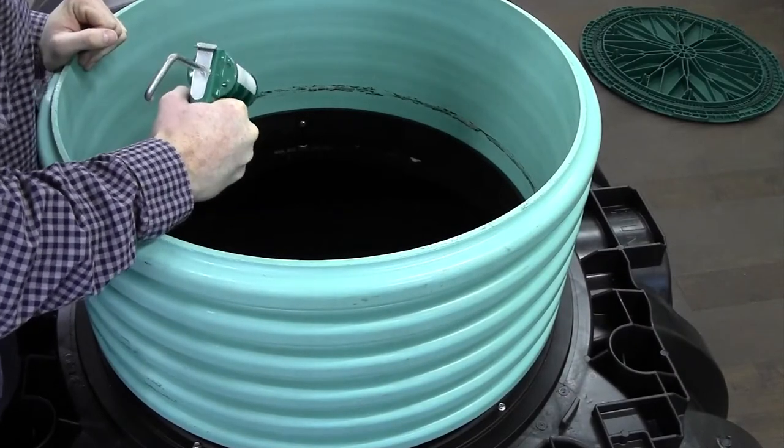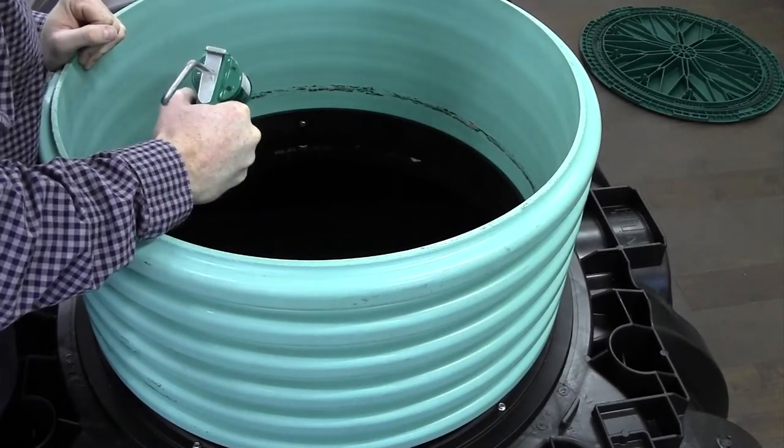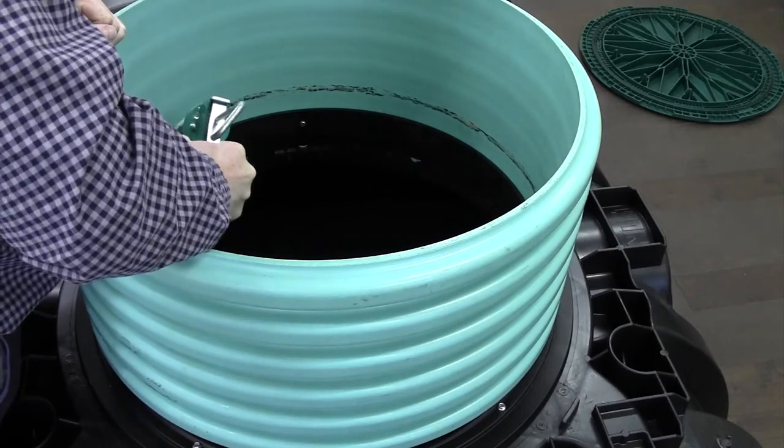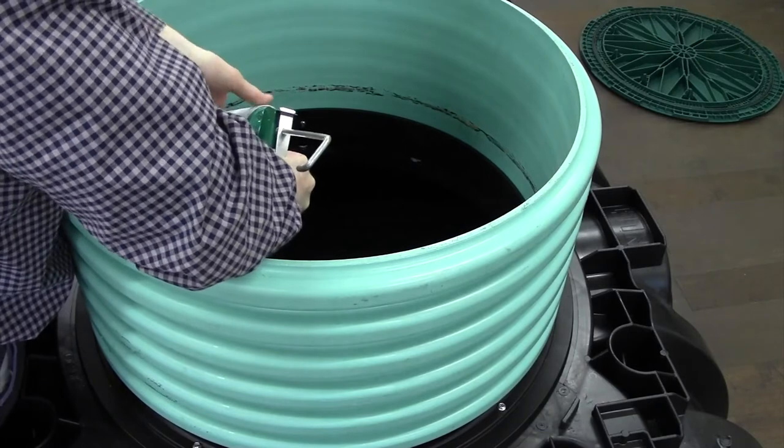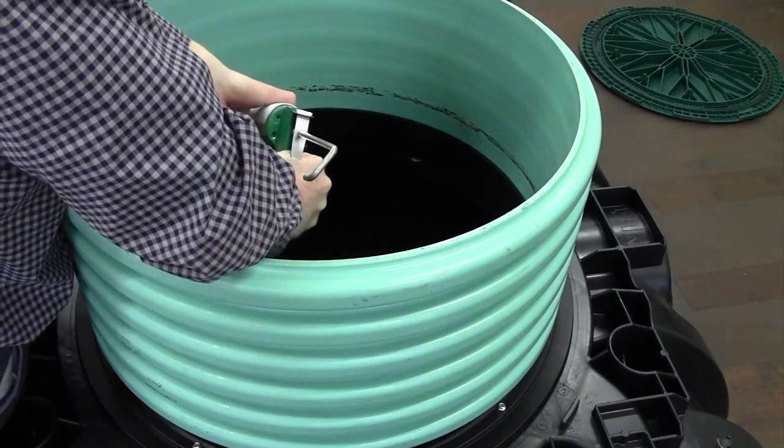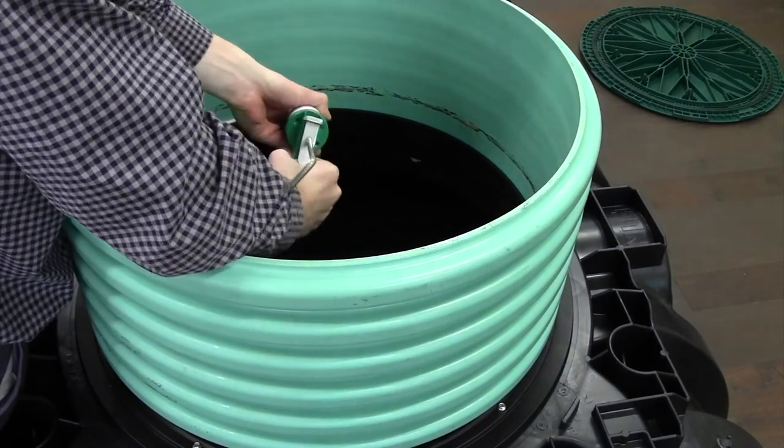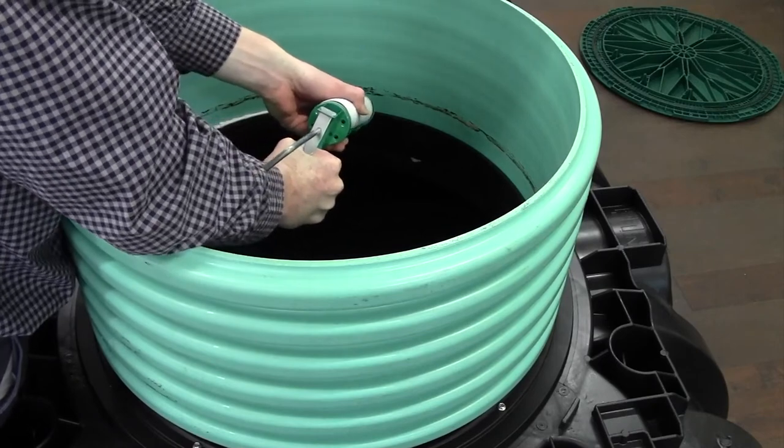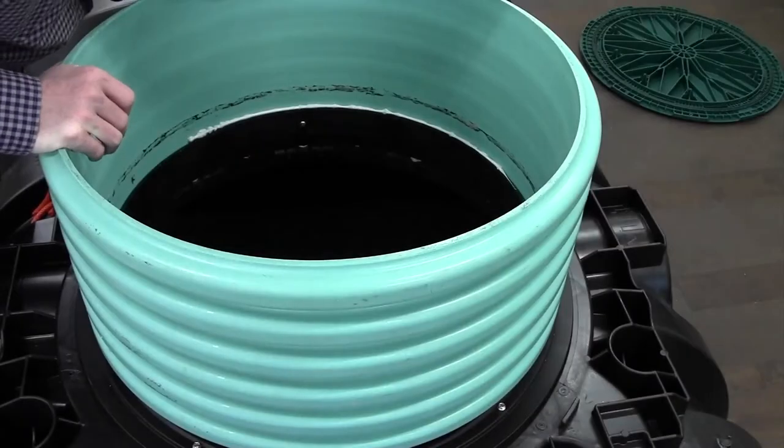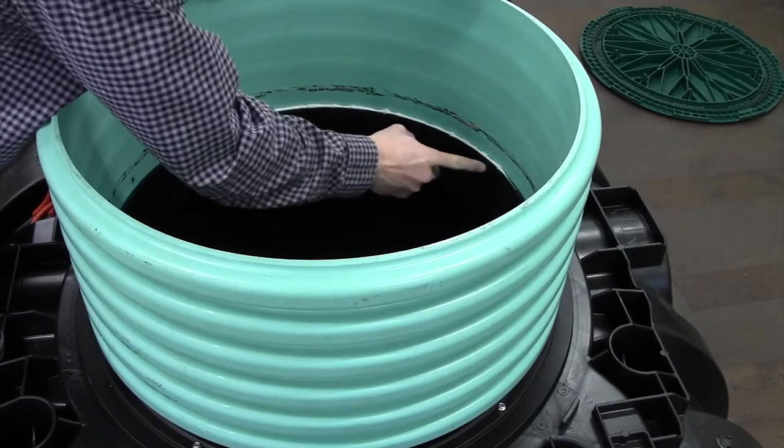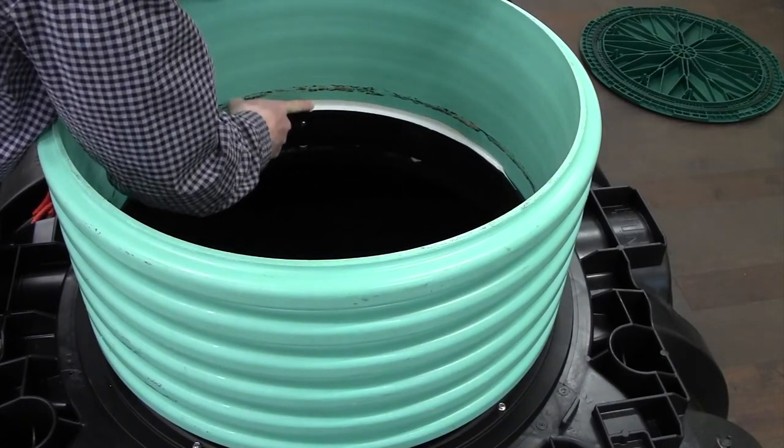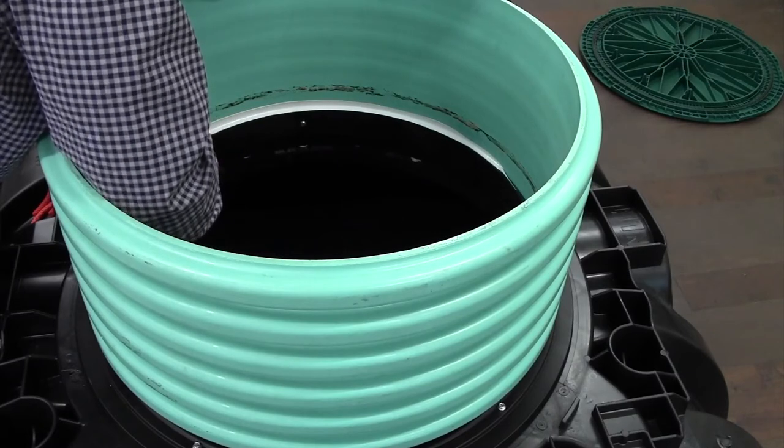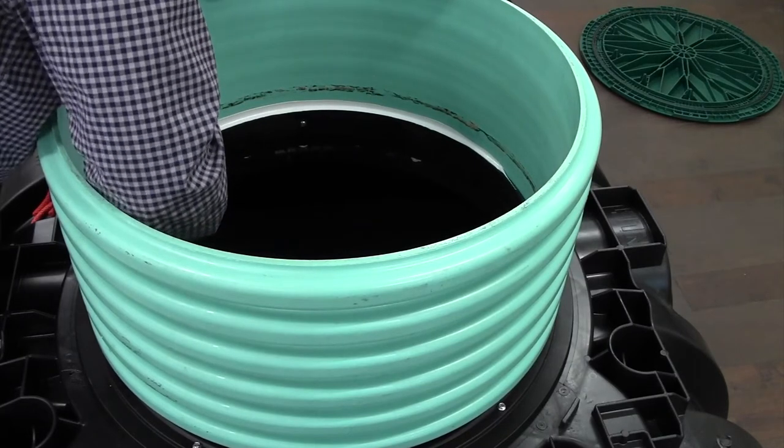Once you've installed your four screws, place a bead of sealant on the top of the adapter flange. Best practice is to use your finger to make sure the sealant gets sealed in between the pipe adapter ring and the riser.